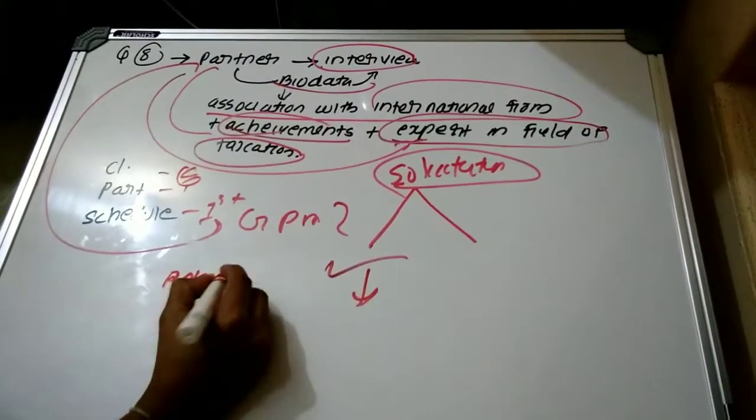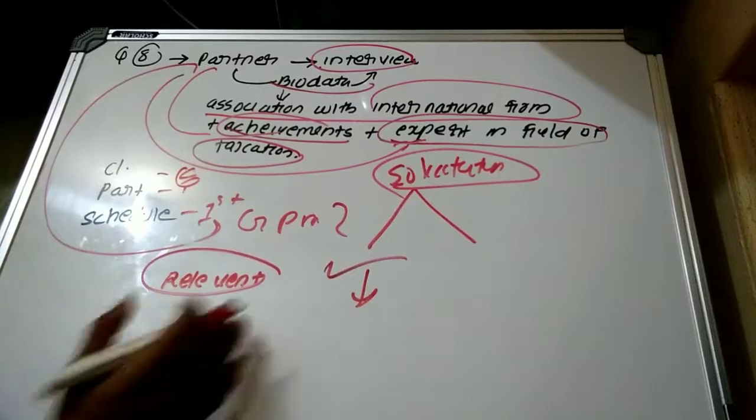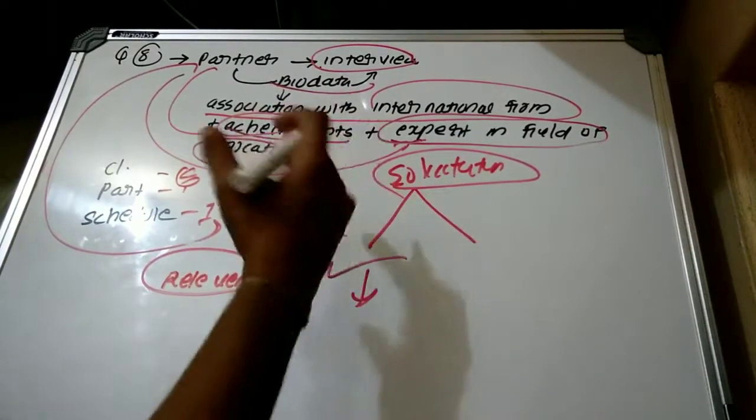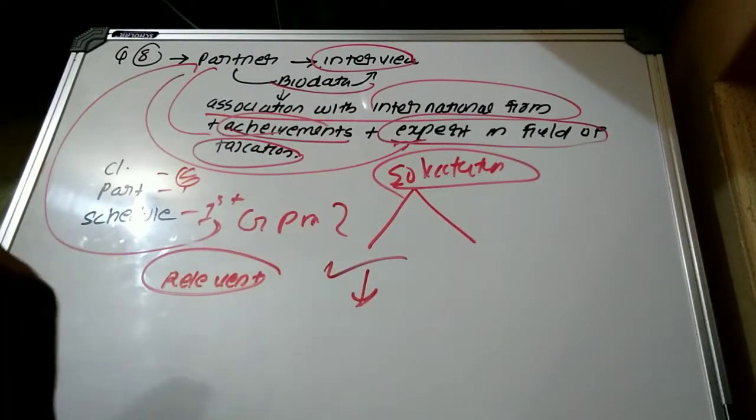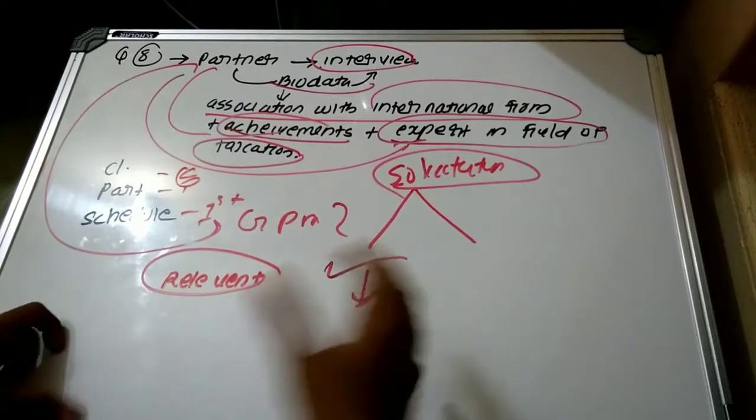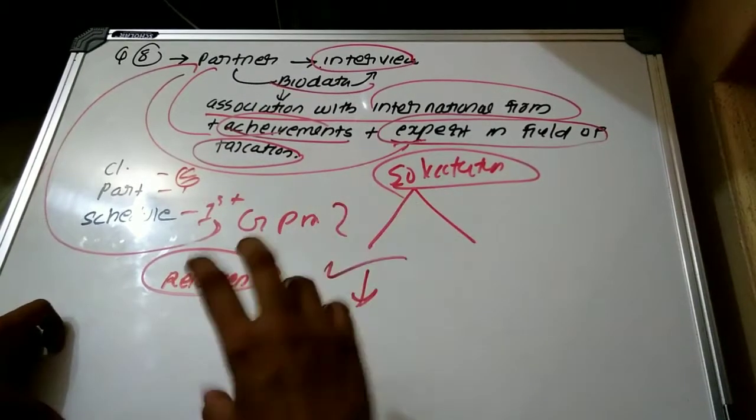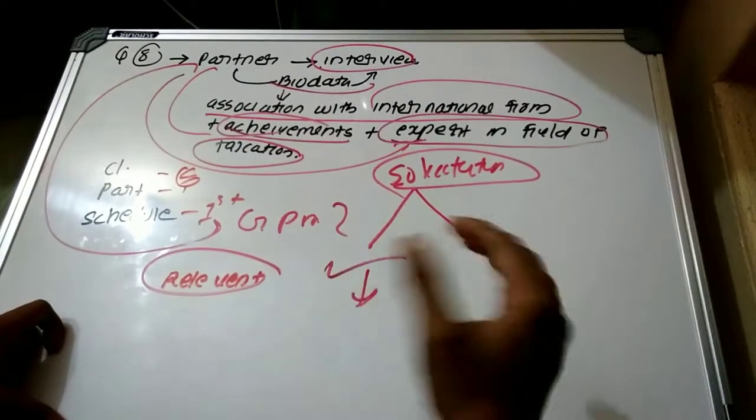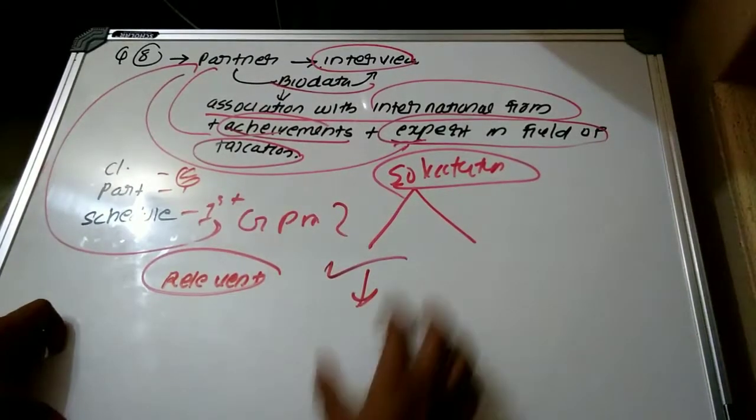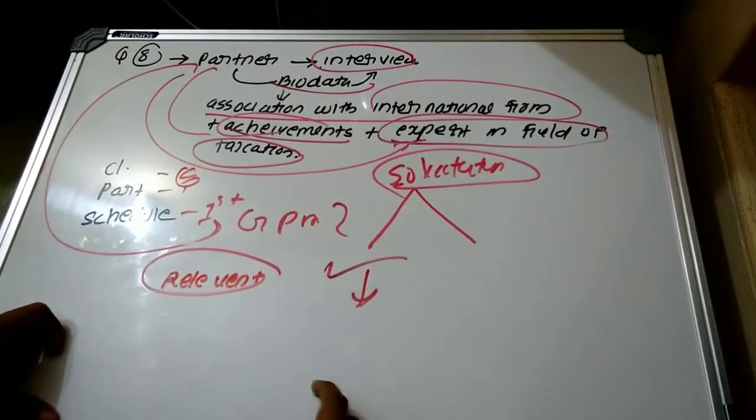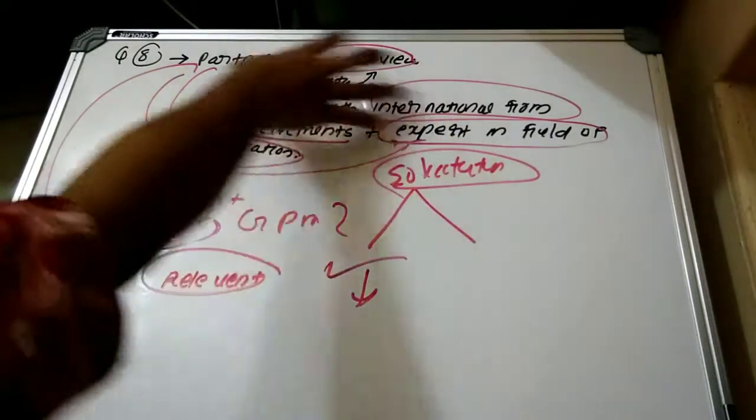As per Clause 6 of Part 1, First Schedule, a CA in practice shall be deemed guilty of professional misconduct if he solicits client or professional work either directly or indirectly through circular, advertisement, personal communication, or interview, or any means which is not open to a chartered accountant.